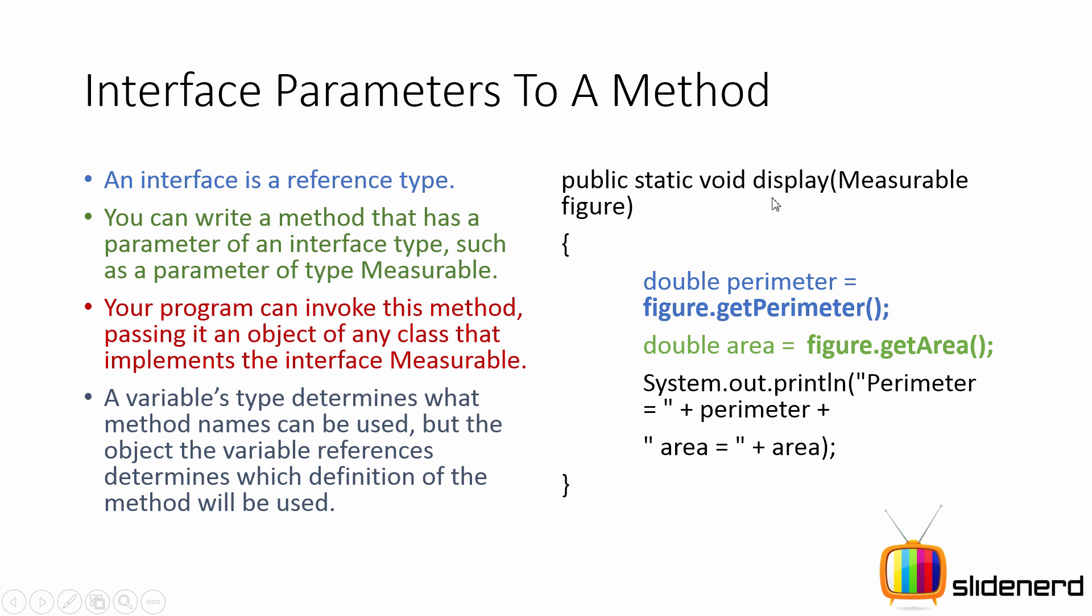If you pass circle here, then the getPerimeter from the circle class will be called. In other words, a variable's type determines what method names can be used, but the object the actual variable contains will determine what definition or version of that method from which class will be used at runtime, which is also why this is polymorphism.